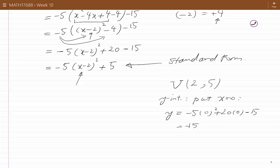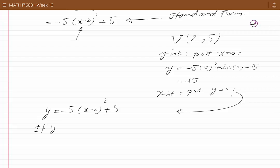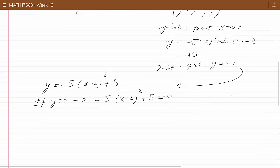To find the x-intercept, we put y equal to 0 and we solve for x. Y is equal to minus 5(x minus 2) squared plus 5. If y is equal to 0, we learn that minus 5(x minus 2) squared plus 5 must be 0. We can solve this equation to find the x-intercept.